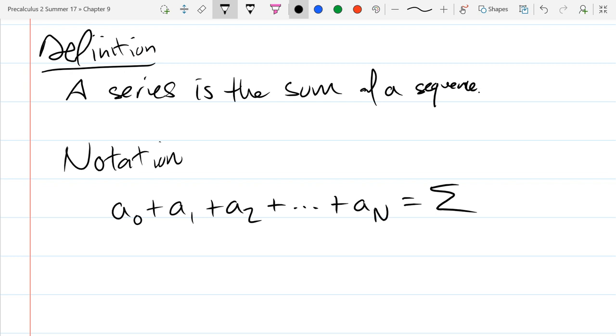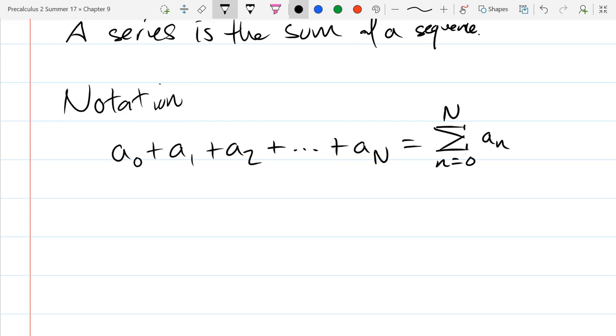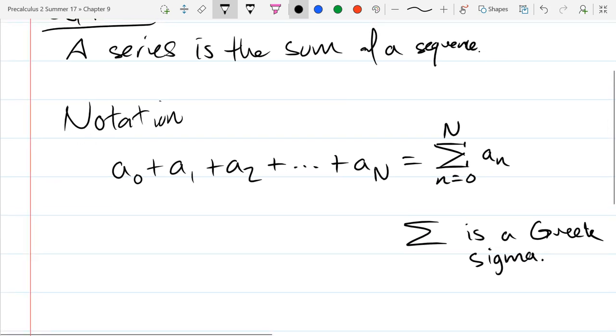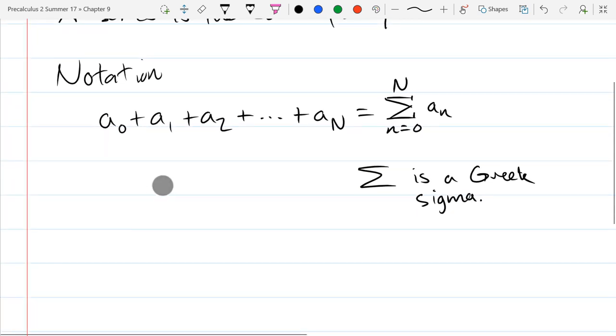And on the right side, we switch it from the curly bracket notation. This is actually a capital sigma. So that's a capital sigma. And we still have the n = 0, and at the top now we write capital N, and aₙ inside. So this is sigma, a Greek sigma.